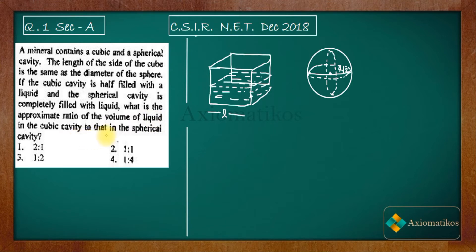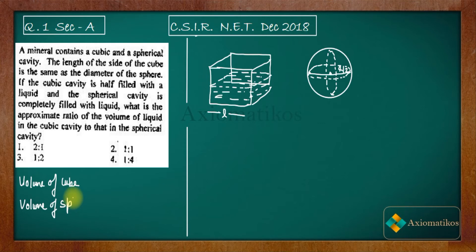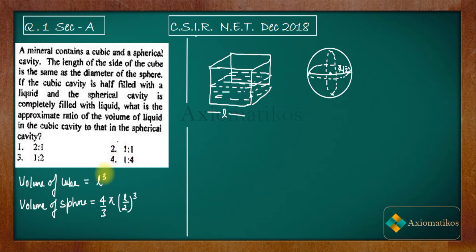We need to write down the volume formulas. The volume of the cube is l³ (length × breadth × height, all equal to l). Since the cubic cavity is only half-filled, the volume of liquid in the cube is l³/2. The volume of the sphere is (4/3)πr³, where r = l/2, so it becomes (4/3)π(l/2)³. The spherical cavity is completely filled.